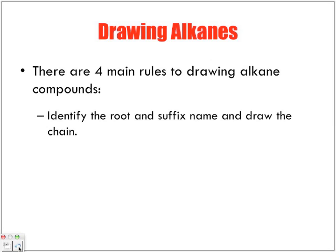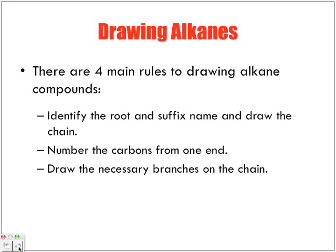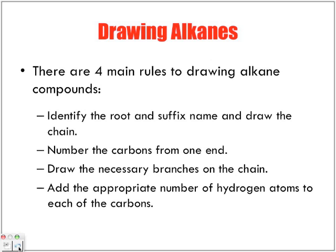One of them, identify the root and suffix name and draw the main chain. So draw your main chain, draw all your carbons, number them. Then number the carbons from one end. Draw the necessary branches on the chains. Find out where these branches are located, actually draw in these branches. And then finally add the appropriate number of hydrogen atoms to each of the carbon atoms.